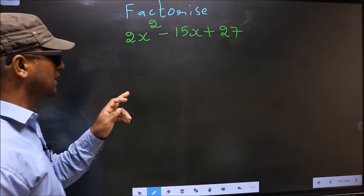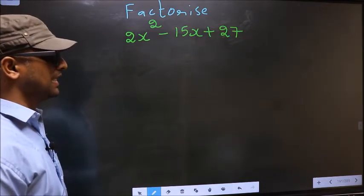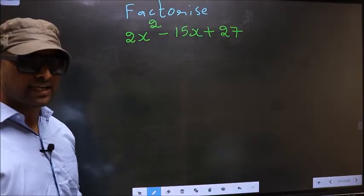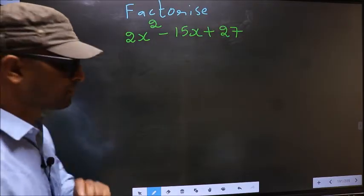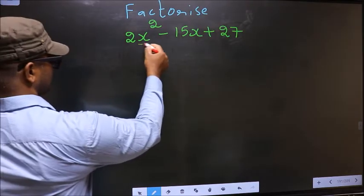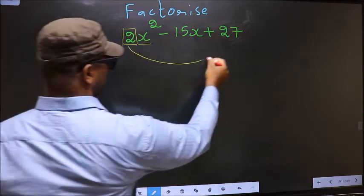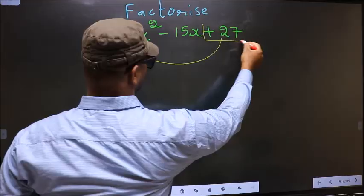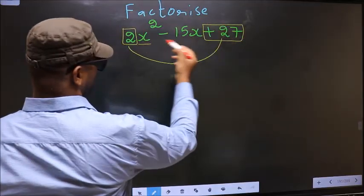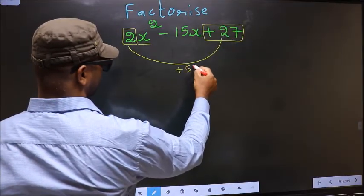Factorize 2x square minus 15x plus 27. To factorize, step 1: coefficient of x square, that is 2 here, should be multiplied to the constant plus 27. So 2 into plus 27, we get plus 54.